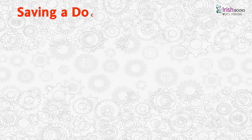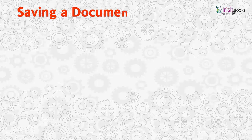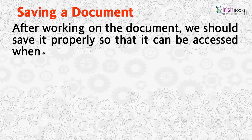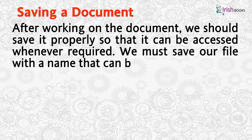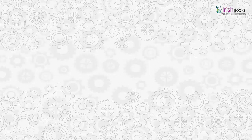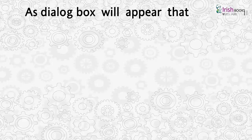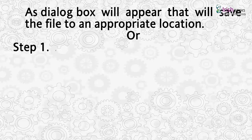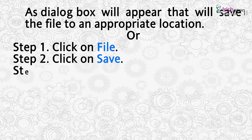Saving a Document: After working on the document, we should save it properly so that it can be accessed whenever required. We must save our file with a name that can be easily remembered, with file extension. The three main methods of saving the file are: click the Save button on the Quick Access Toolbar, or press Ctrl+S on the keyboard. A Save As dialog box will appear to save the file to an appropriate location. Or, Step 1, click on File. Step 2, click on Save.